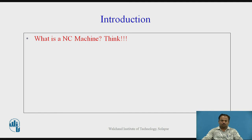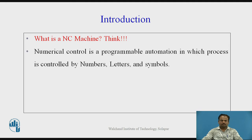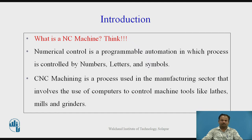First of all, I will ask you: what is a CNC machine? That is, a numerical control machine. Numerical control is a programmable automation in which a process is controlled by numbers, letters, and symbols. CNC machining is a process used in the manufacturing sector that involves the use of computers to control machine tools like lathes, mills, and grinders.